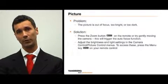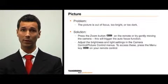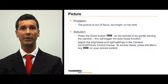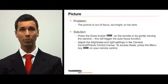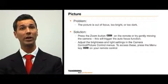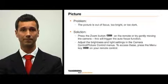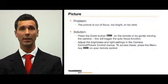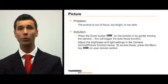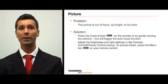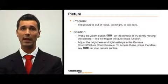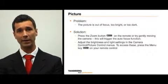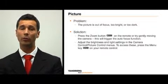If the picture is out of focus, too bright, or too dark, the following steps should solve the problem. If the picture is out of focus, press the zoom button on your remote control or try gently moving the camera — this will activate the auto focus function. If the picture is too bright or too dark, you can adjust the brightness and light settings in the camera control and picture control menus. To access these, press the menu key on your remote control.